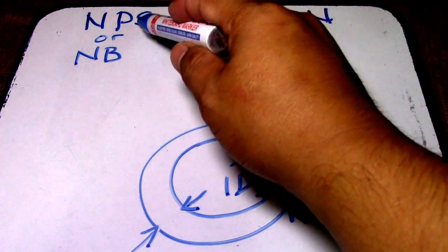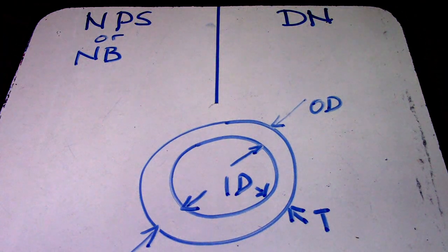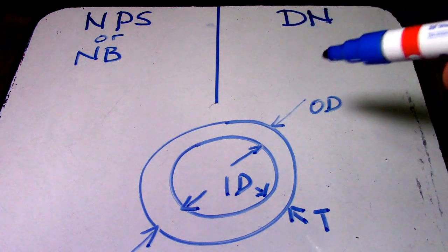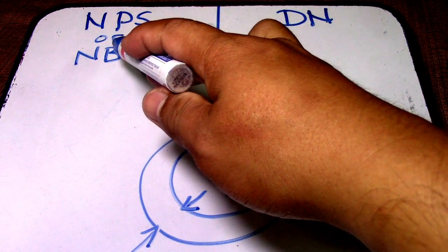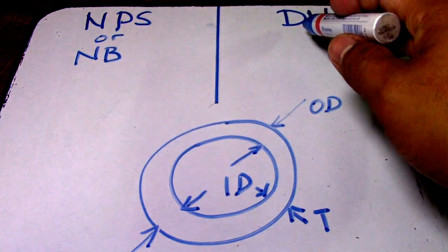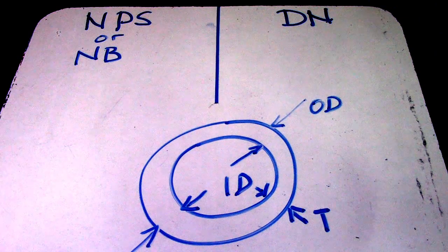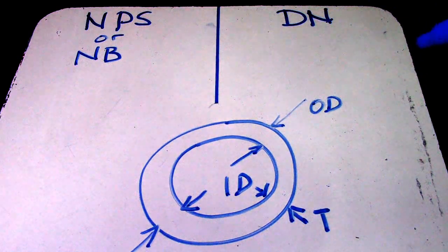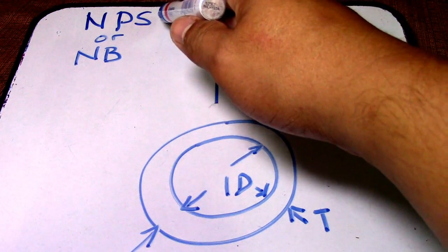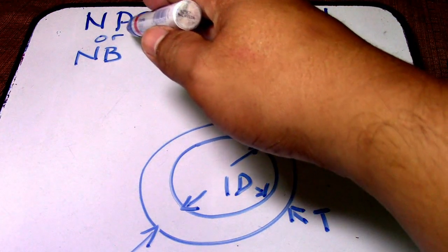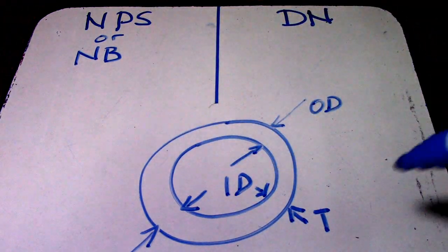We have NPS and DN. NPS stands for Nominal Pipe Size, NB is Nominal Bore, and DN is Diameter Nominal. In the American system, pipe diameter is known as NPS or NB. These are different designation systems for the same pipe sizes.